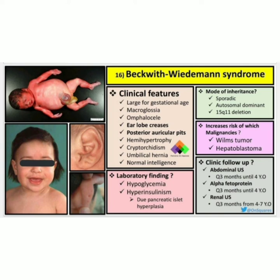For clinical follow-up: abdominal ultrasound every three months until four years of age, alpha-fetoprotein every three months until four years of age, and renal ultrasound every three months from four to seven years of age. This is all about Beckwith-Wiedemann Syndrome.